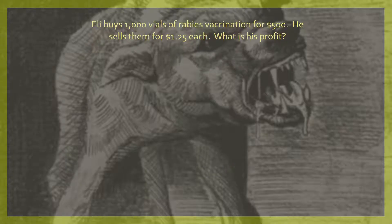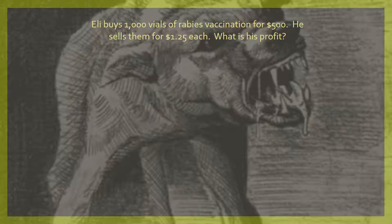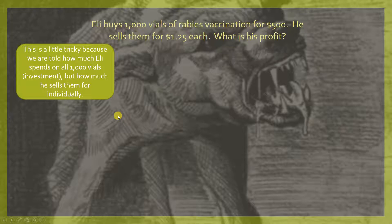So our buddy Eli, always trying to turn a quick buck, sees a good opportunity here. He buys a thousand vials of rabies vaccination for $500 and sells each of them for $1.25. We have to figure out how much he made. Now the phrase 'how much he made' is actually talking about profit, not just about his income.